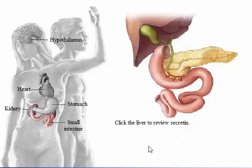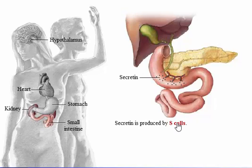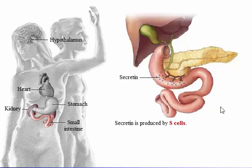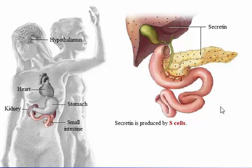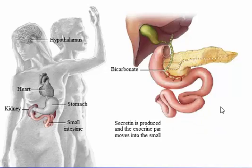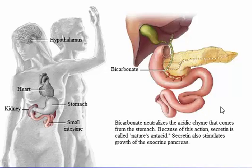Secretin is produced by S cells. It causes both the liver and the exocrine pancreas to produce bicarbonate that moves into the small intestine, neutralizing the acidic chyme that comes from the stomach. Because of this action, secretin is called nature's antacid. Secretin also stimulates growth of the exocrine pancreas.